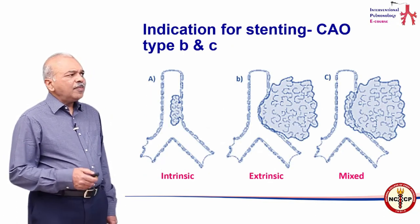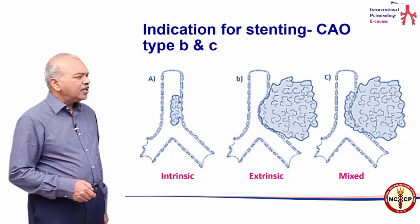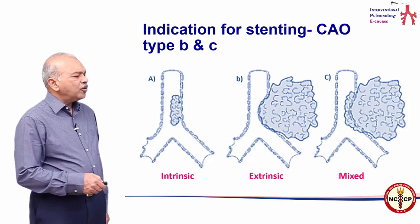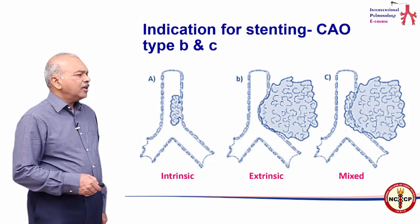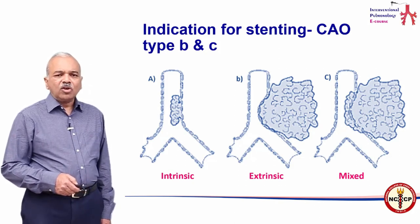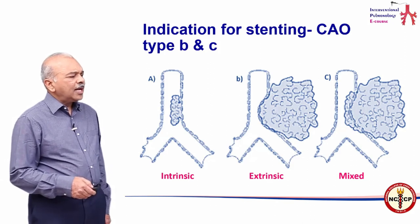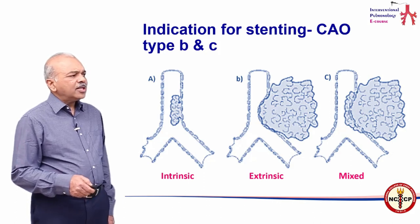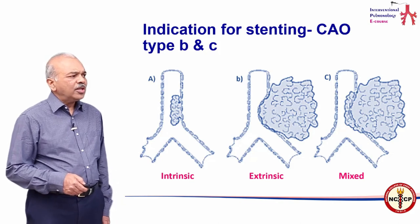Which types of central airway obstruction benefit from stenting? There are basically three types. Type A is a purely intrinsic intraluminal obstruction, where debulking therapies like electrocautery, laser, or mechanical coring help. Types B and C involve pure extrinsic compression or a mixed type, where there is extrinsic compression due to a mass as well as infiltration of the tracheobronchial wall.